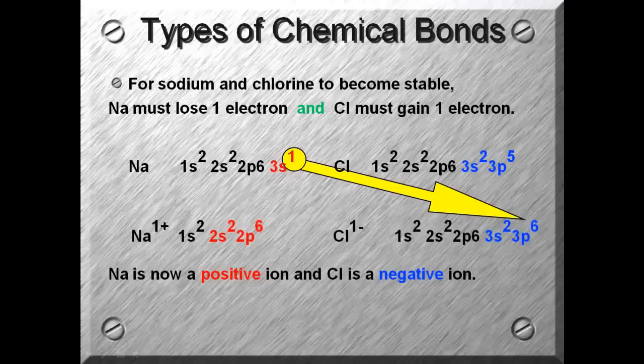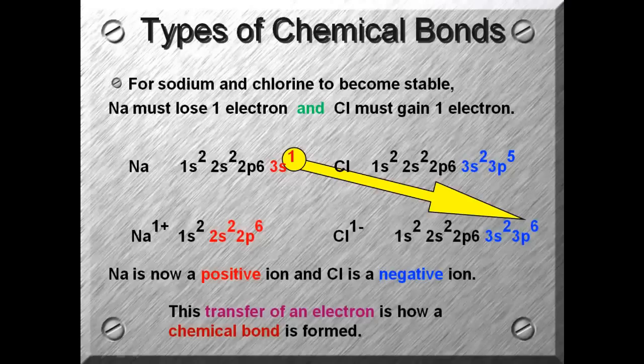They both now have stable octets in their outermost energy levels. This transfer of an electron from sodium to chlorine is how a chemical bond is formed.